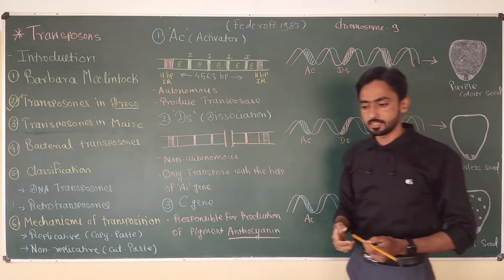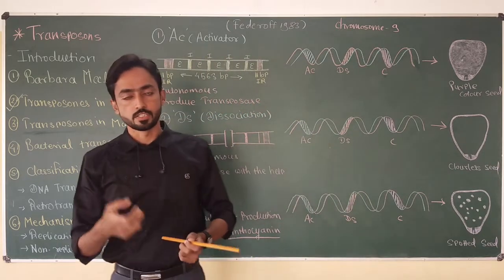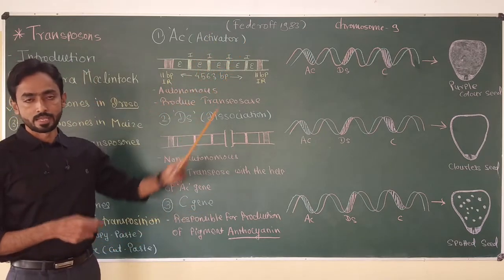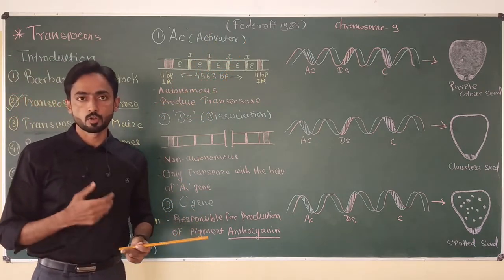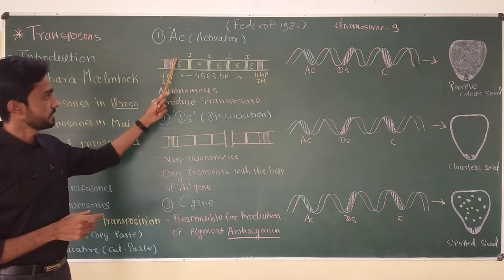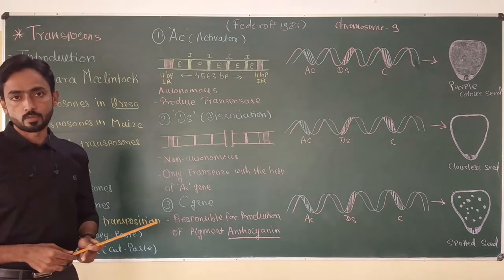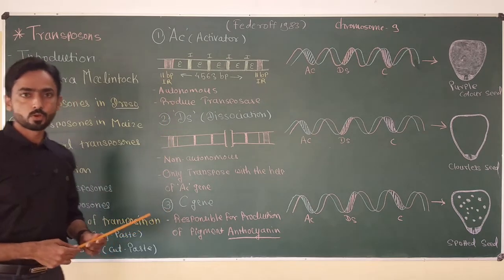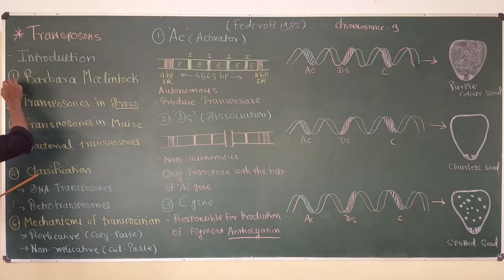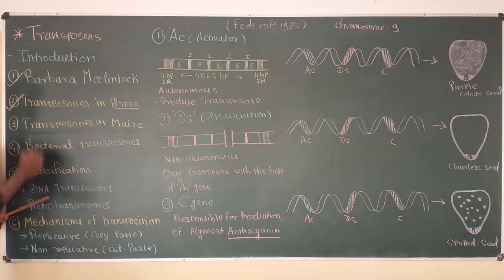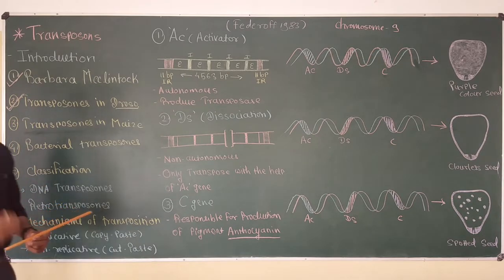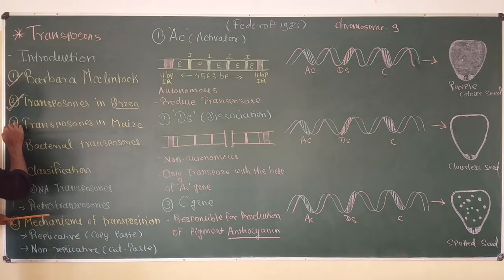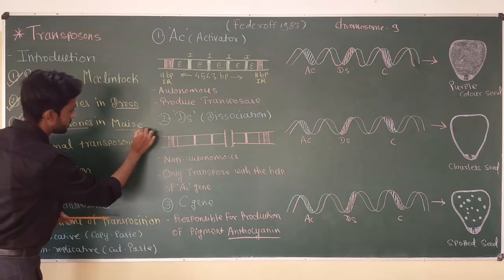In that same year, Fedoroff isolated both these elements from the maize genome and sequenced them. Sequencing is the technique in which scientists determine the nucleotide sequence of genes. So Fedoroff in 1983, the same year Barbara received the Nobel Prize, analyzed the AC and DS elements and found the correct sequence of both these elements inside chromosome number 9 of the maize plant. Now in this video, I am going to mainly focus on transposons present in the maize plant.